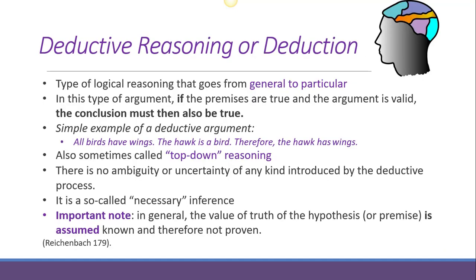Let's start with deduction. With deductive reasoning, we are going from general to specific. In this kind of argument, if your premises are true and the logic of the argument is valid, then the conclusion must also be true.